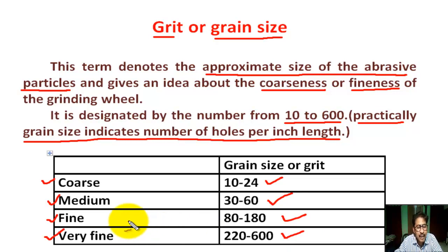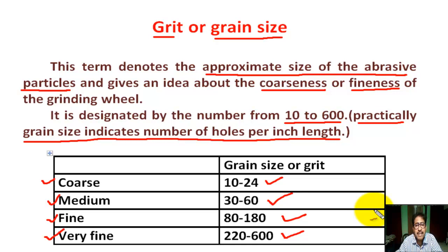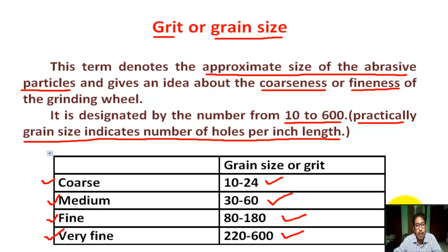A grinding wheel may have abrasive particles of the same size or different size. When abrasive particles are of the same size, it is called a straight wheel. And when abrasive particles are of different sizes, it is called a compound wheel.